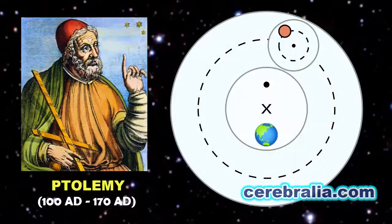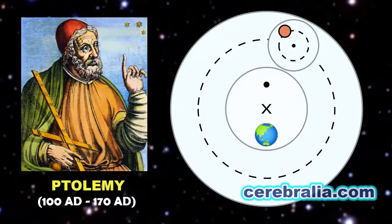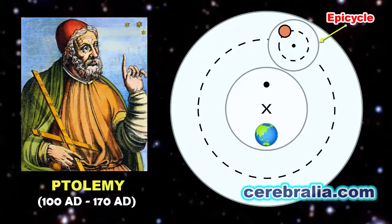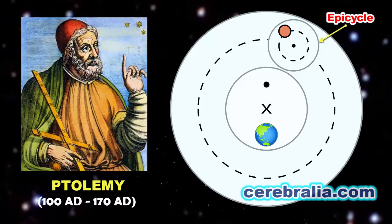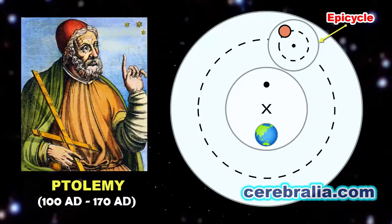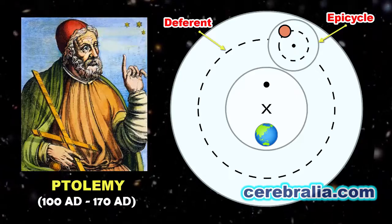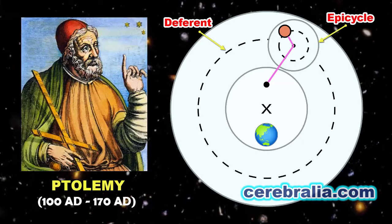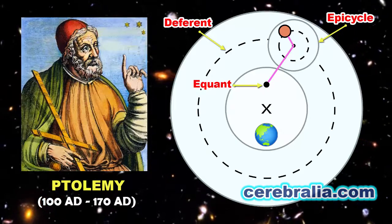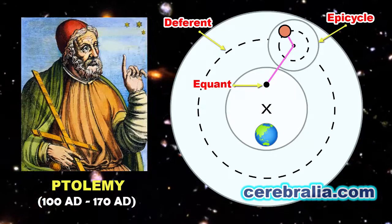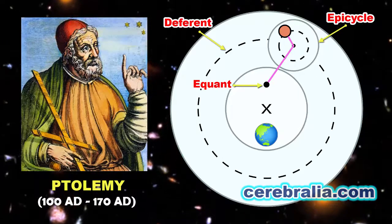According to Ptolemy, each planet revolves uniformly along a circular path called epicycle, the center of which revolves around Earth along a larger circular path called deferent. The epicycle center sweeps out equal angles along the deferent in equal times from a point that he called the equant. The center of the deferent was located midway between the equant and Earth.